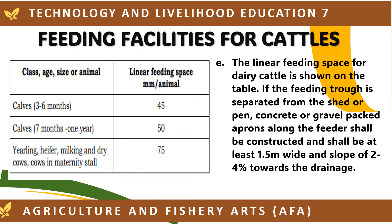The linear feeding space for dairy cattle is shown in the table below. If the feeding trough is separated from the shed or pen, concrete or gravel-packed aprons along the feeder shall be constructed at least 1.5 m wide with a slope of 2 to 4% toward drainage. The following are the linear feeding spaces per animal.